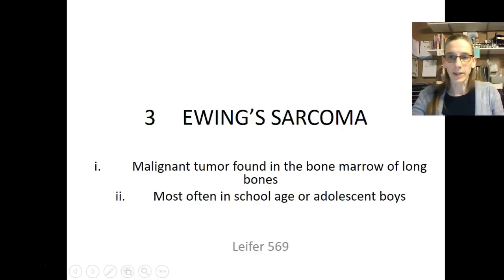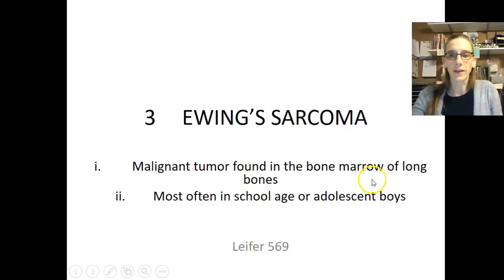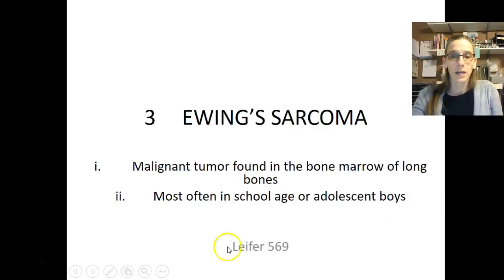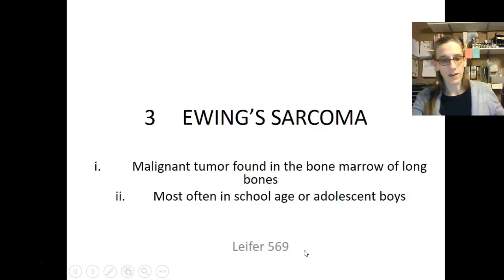Ewing sarcoma is a malignant tumor found in the bone marrow of the long bones. This is most often found in school-age or adolescent boys. You can find information in Leifer on page 569.